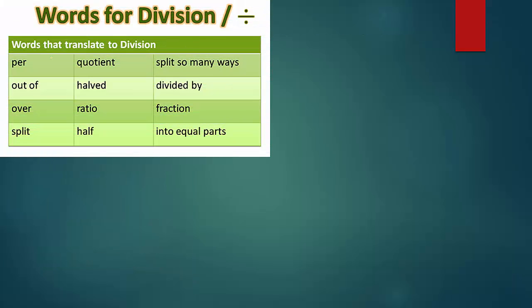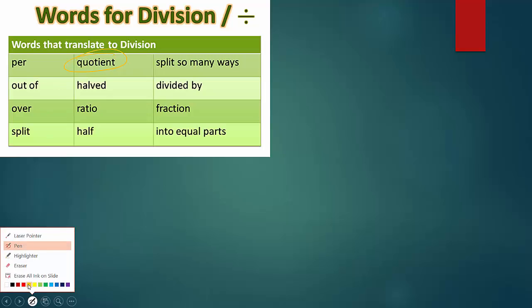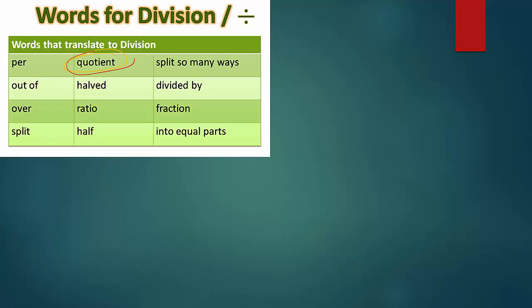Alright. So, for division, quotient is one you're going to see quite a bit of. So, quotient, you'll see a lot of. Out of, per, that's huge. Ratio, divided by, obviously.